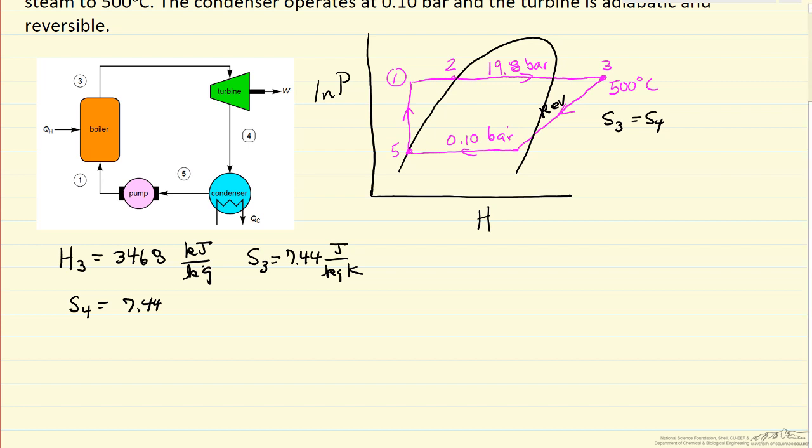S4 equals 7.44 joules per kilogram Kelvin. From the diagram and steam tables, this is a combination of saturated liquid and saturated vapor. So x is the quality, the fraction that's vapor, times the saturation entropy of vapor, plus (1-x), the fraction of liquid, times the saturation entropy of liquid.